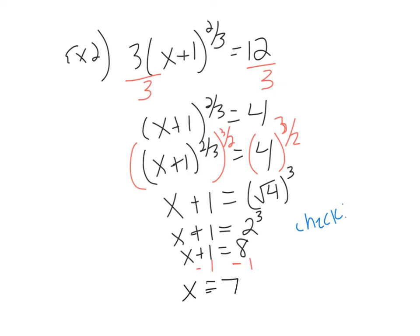Check. So let's come over here and check. Again, I'm putting it into the original. So I have 3 times x, what did we find as x? We found x to be 7, plus 1, raised to the 2/3. Let's see if we get 12. Well, 7 plus 1 is 8. Well, 8 raised to the 2/3 is the same as saying the cube root, remember, denominator is 3, cube root of 8 squared. Well, what is the cube root of 8? Cube root of 8 is 2.